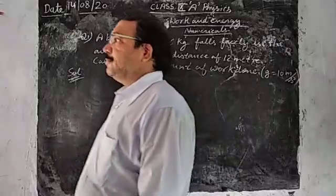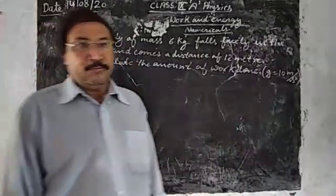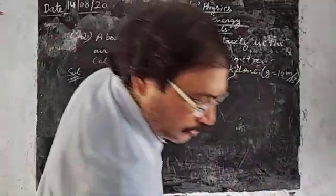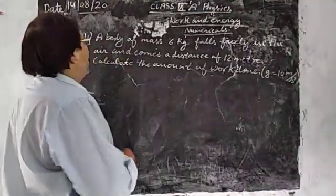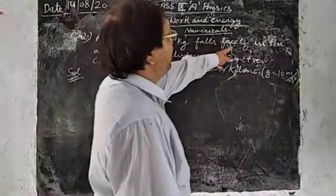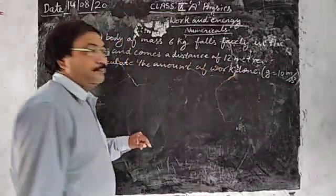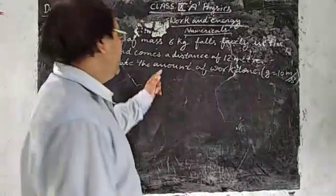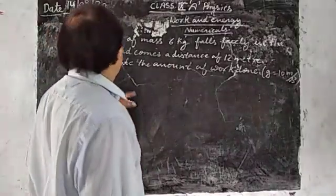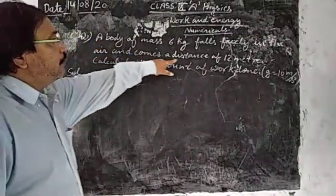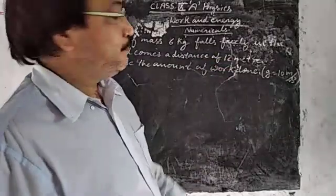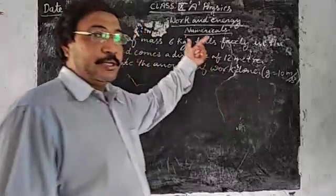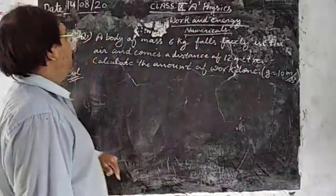Our next problem is a very simple problem. I have seen on the board, and that is a body of mass 6 kg falls freely within an enclosure, and comes a distance of 12 meters. After traveling, it reaches a height of 12 meters.